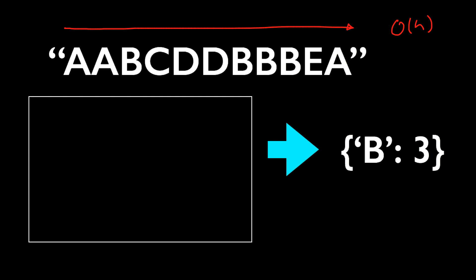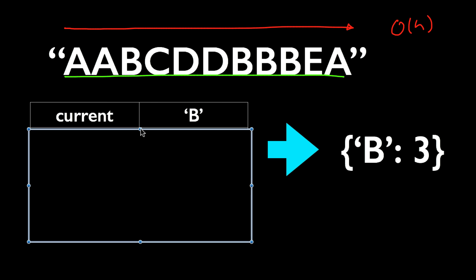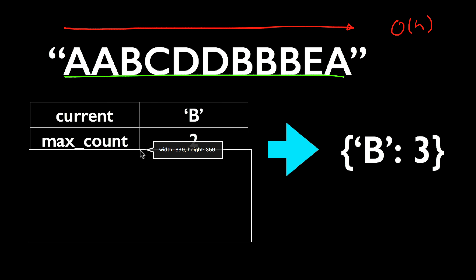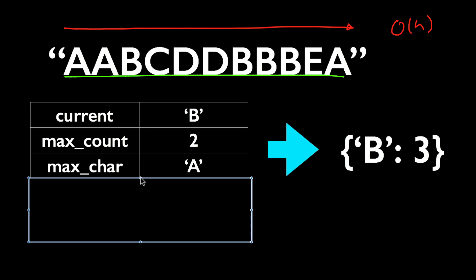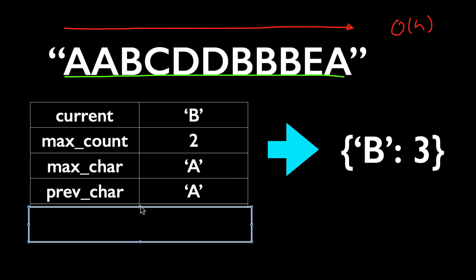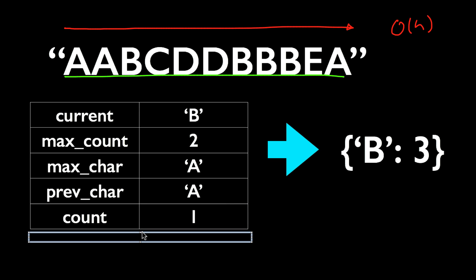As we go through this string, there are only 5 variables that we are going to keep track of: current for the current character that we are examining, max_count for the length of the longest sequence that we've seen so far consisting of a single character, max_char for the character that sequence is consisted of, prev_char for the previous character before the current character, and count for the length of the current sequence that we are examining.